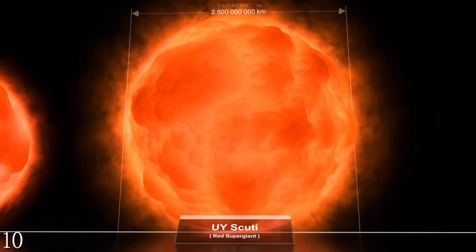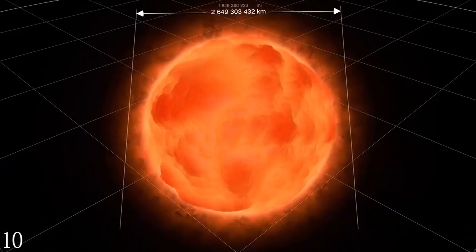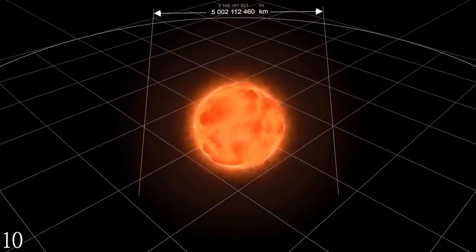UY Scuti's mass is unknown, but before UY Scuti comes VY Canis Majoris, a star that is 5 billion times the size of our Sun.